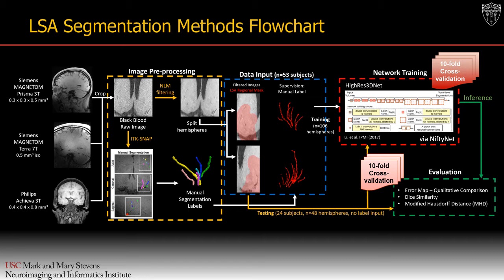Since 10 models were built through the cross-validation, the consensus of the 10 outputs was generated by averaging the 10 probability maps and subsequently binarizing with a threshold of 0.5. This was used for evaluation with a qualitative error map, Dice similarity, and modified Hausdorff distance.